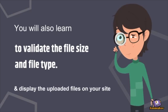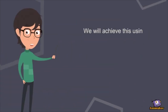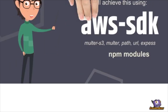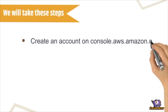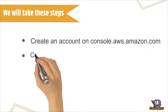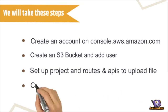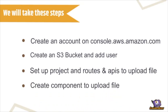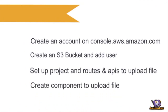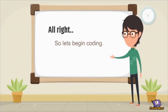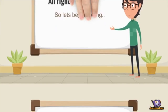We'll achieve this using AWS SDK, Multer S3, Multer, Path, URL, and Express. We will do this by creating an account on console.aws.amazon.com, creating an S3 bucket, adding a user, setting up a project, creating routes and APIs to upload files, and creating a component to upload files. So let's begin.